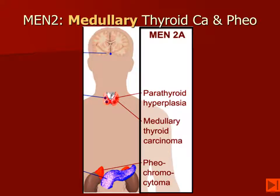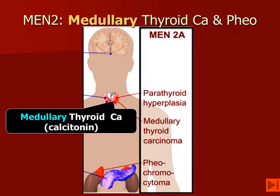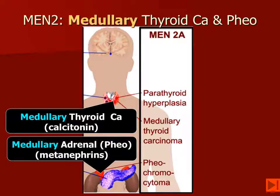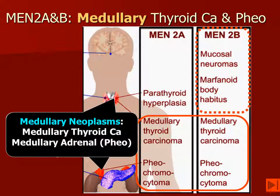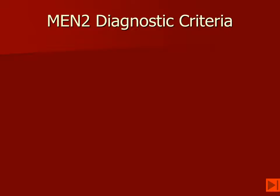When we think about MEN2, this is primarily a disease of the medulla of the thyroid and the medulla of the adrenal gland. These patients develop medullary thyroid cancer and pheochromocytoma, or medullary adrenal tumors. So MEN2 is a medullary disease. MEN2B is very similar to MEN2A but adds the presence of mucosal neuromas on the lips and tongue and a marfanoid body habitus. MEN2B patients may also have ganglioneuromatosis of the intestines.